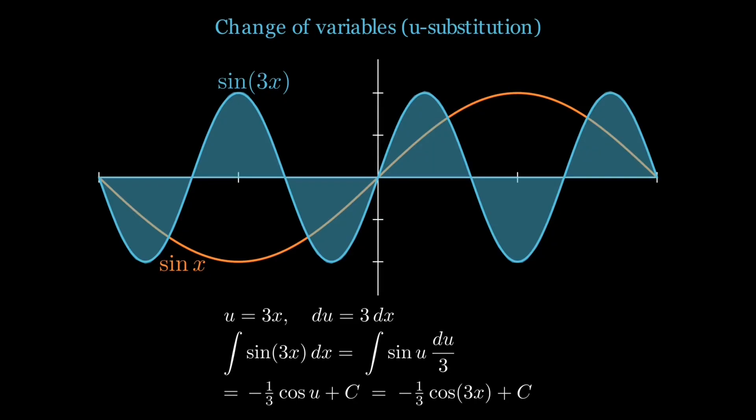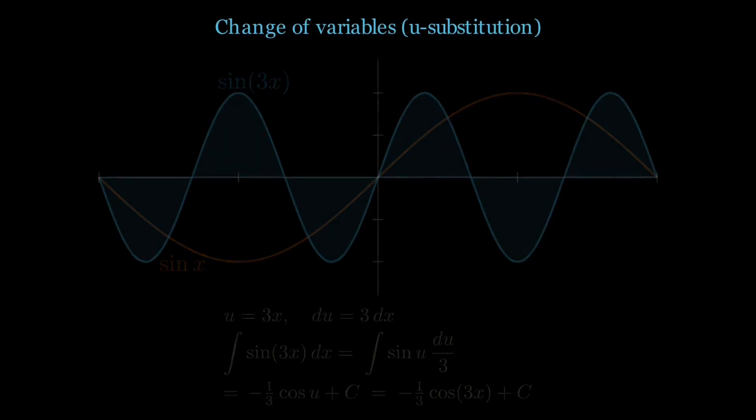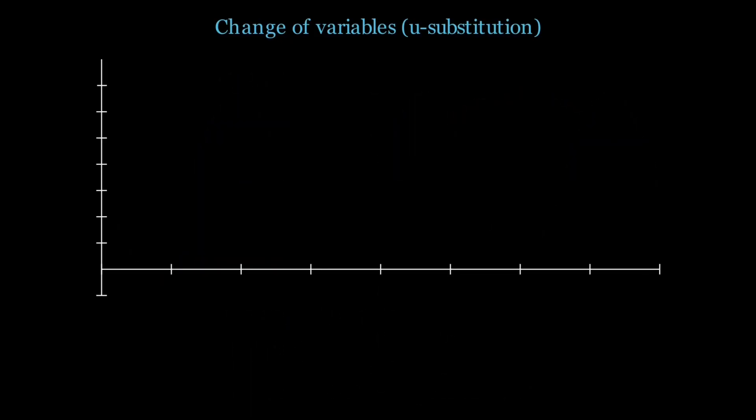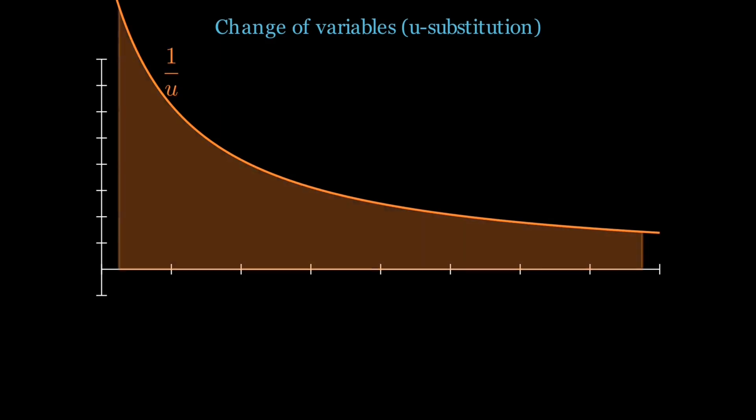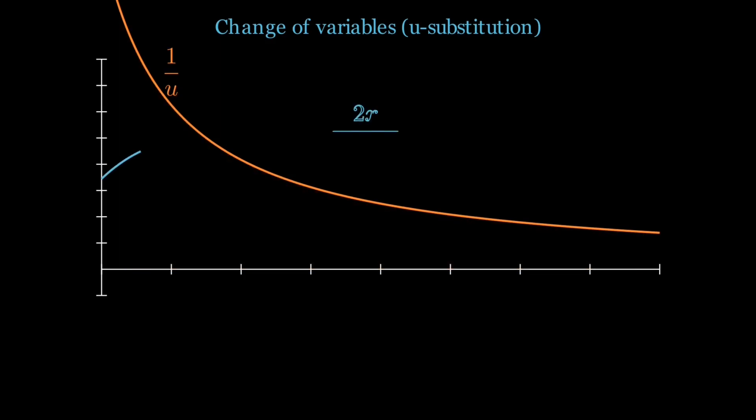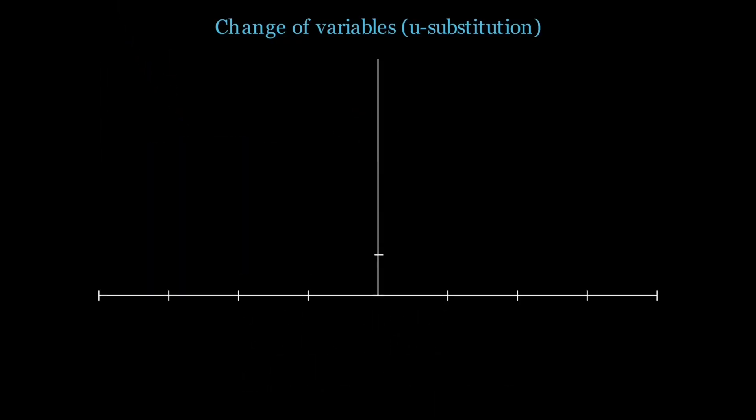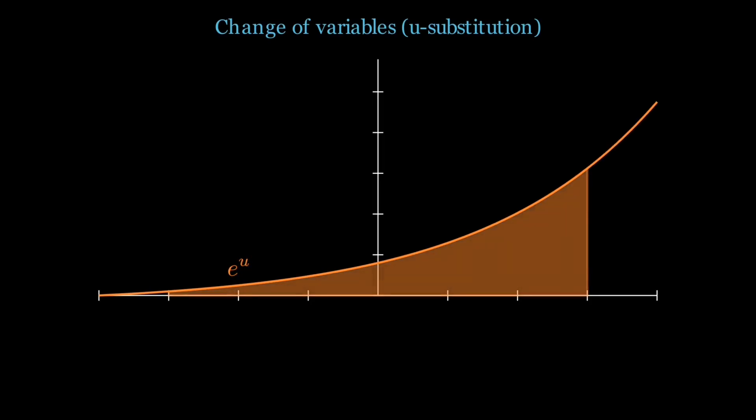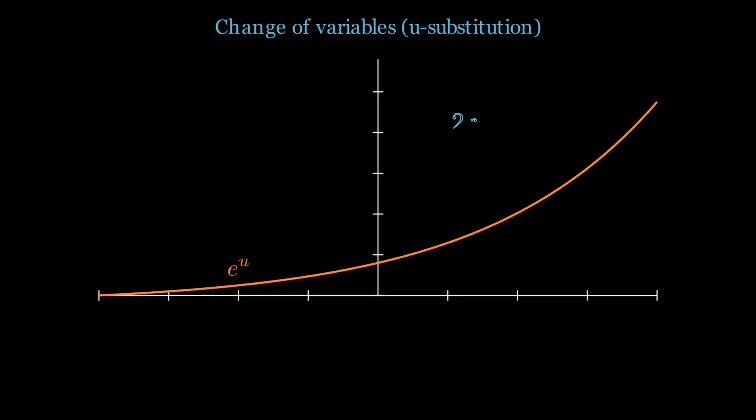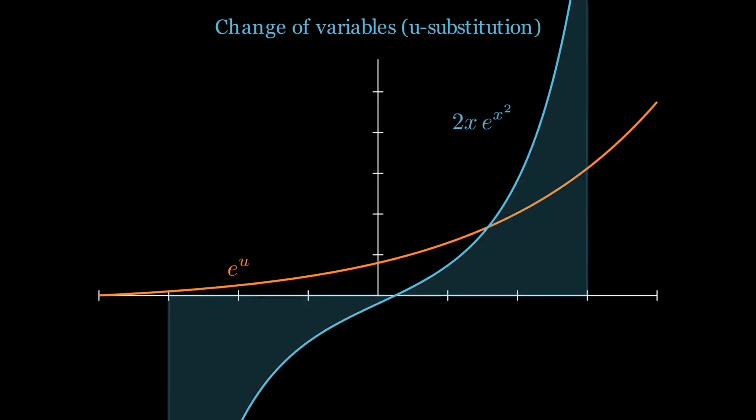So, think of sine of 3x. The oscillations are squeezed threefold, so we stretch them back with a new variable. Or think of a fraction like 2x over 1 plus x squared. The top is the derivative of the bottom, and so the whole thing collapses neatly into a logarithm.